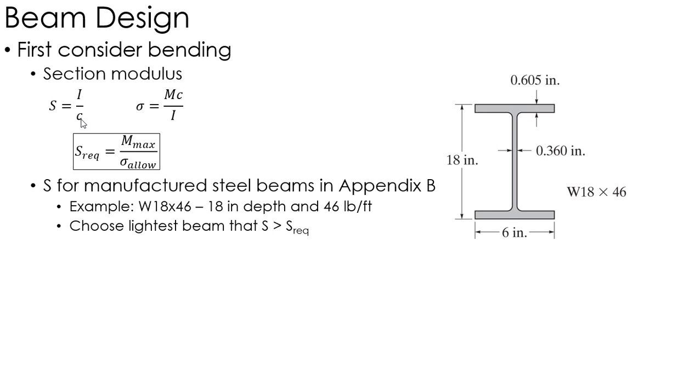Now, for steel beams, we have a table actually in the back of the book in Appendix E. And in that table, we look up S values. For example, they have a wide flange beam, which is defined as W18 by 46.